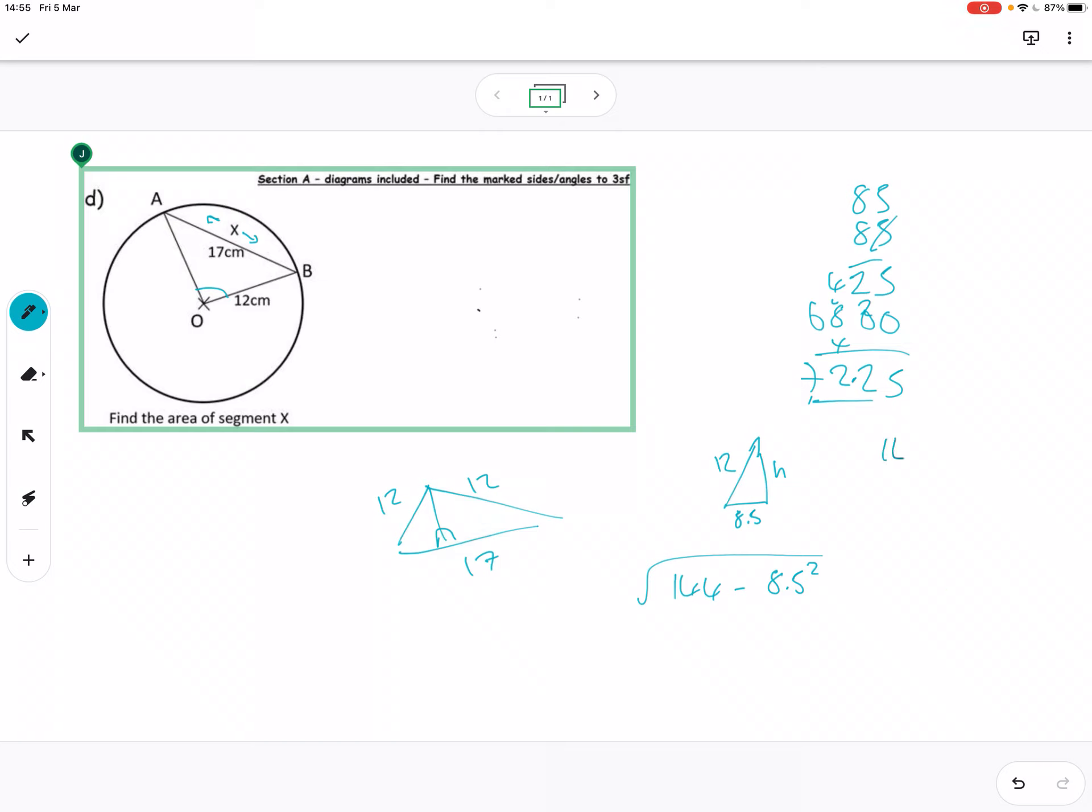And then 144 minus 72.25, three, nine, one, five, seven, one, seven. Square root of 71.75 is going to give me the height, and then I just want that multiplied by 8.5, I think. So 8.5 multiplied by the square root of 71.75.